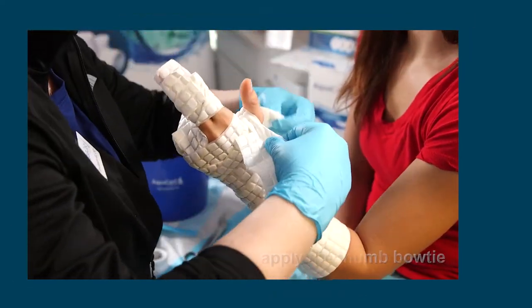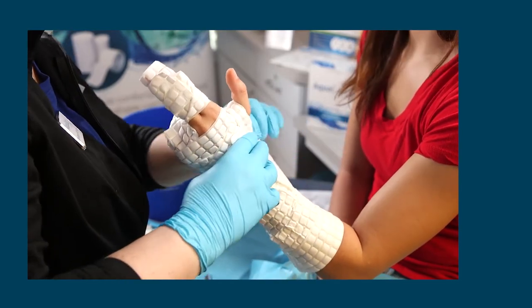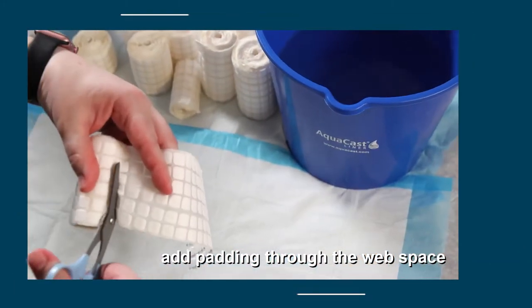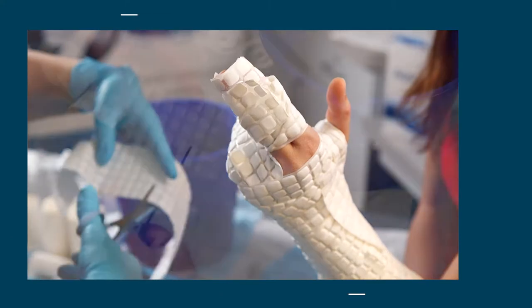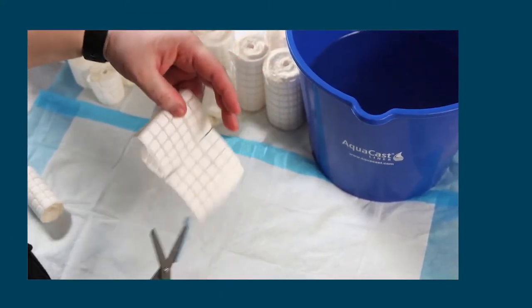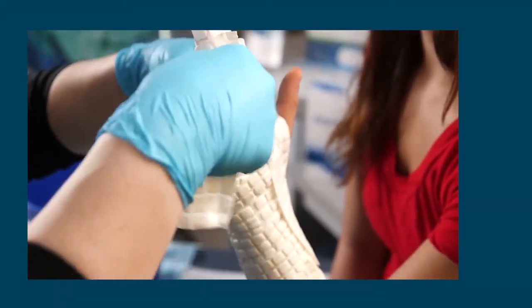Apply the thumb bow tie. To add padding through the web space, add a second bow tie using a three or four inch roll. Make cuts six or seven pads wide. Lay the material between the fingers.